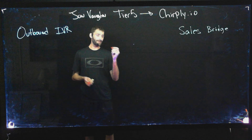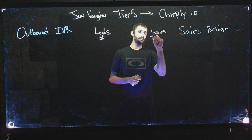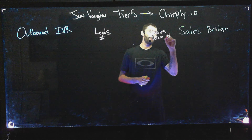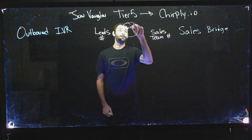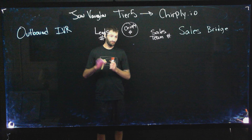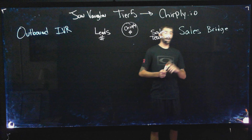A few things you just need to know here: you're going to have leads and they are going to have their own phone number. You are going to have your sales team, which could be a whole team of people or it could literally just be you — they're going to have their own phone numbers. And in the middle, you're going to have a Chirply phone number.